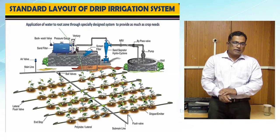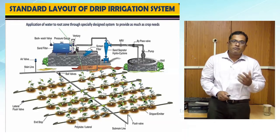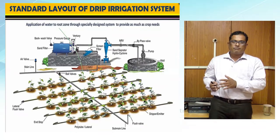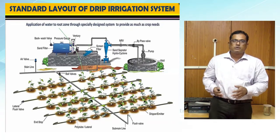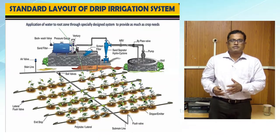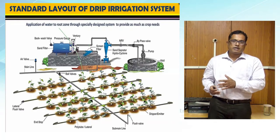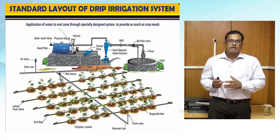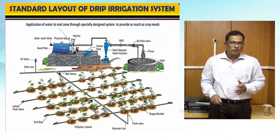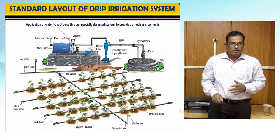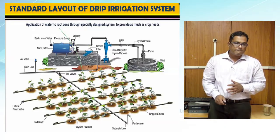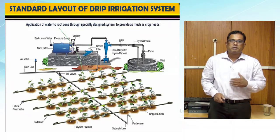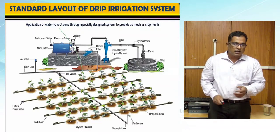The system has one water source from where water is lifted and passed through a head control unit. The head control unit consists of a pre-filter, which clears impurities. This is especially important if the water source is a river or a borewell where sand or silt may enter the system. The pre-filter used here is a hydrocyclone filter — although not mandatory, keeping it is very good for the system and its lifespan.